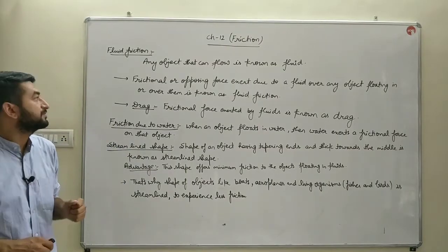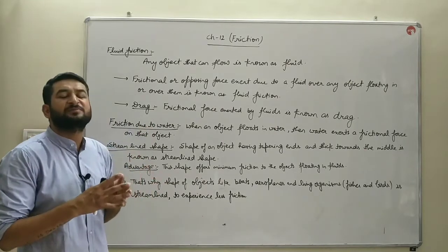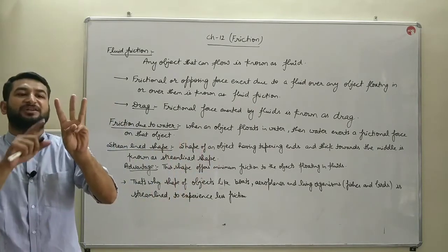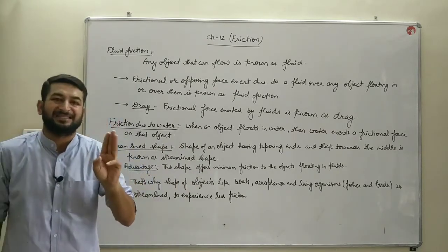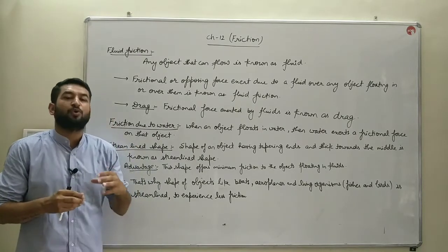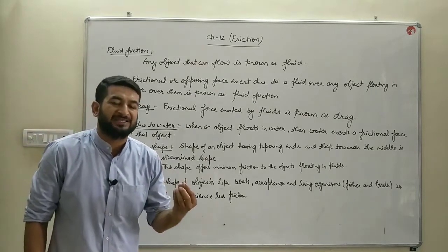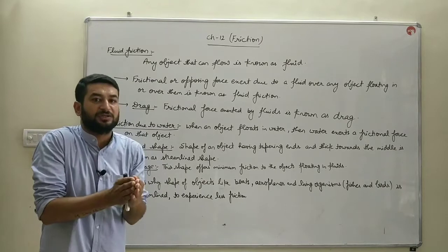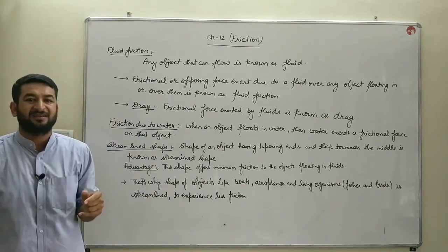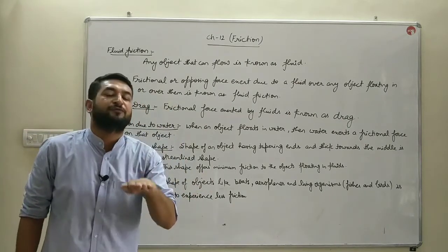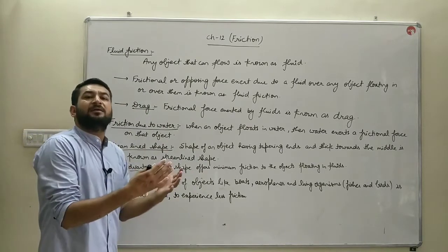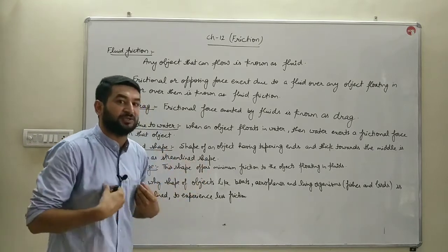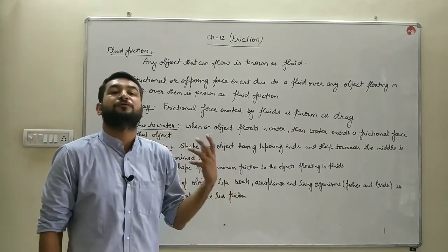Next is fluid friction. Fluids are any state of matter which can flow easily — liquids and gases are considered fluids. Whenever an object moves in or through air or water, those liquids or gases exert a friction over that object. The friction exerted by liquids or gases on an object moving through them is known as fluid friction. For example, when we are swimming, water exerts a force opposite to our motion — that opposing force is fluid friction.